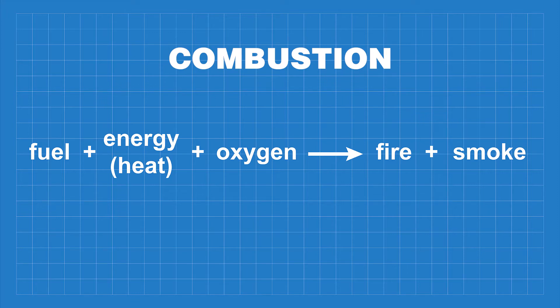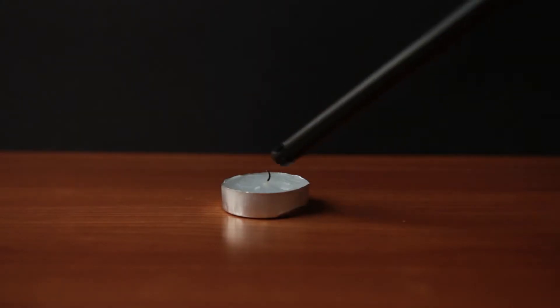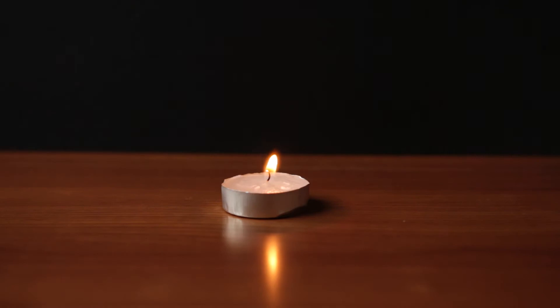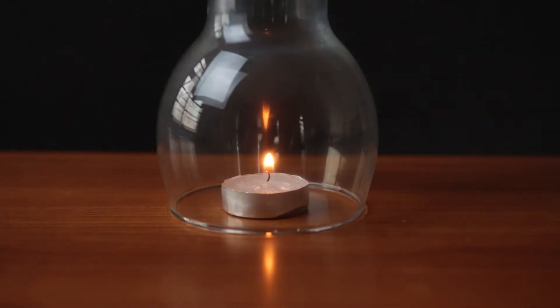If we remove any of these from the equation, for example the oxygen, the flame would disappear. An easy way to show this is to light a small candle and cover it with a glass. After the flame uses up all the oxygen trapped in the glass, it will slowly go out.